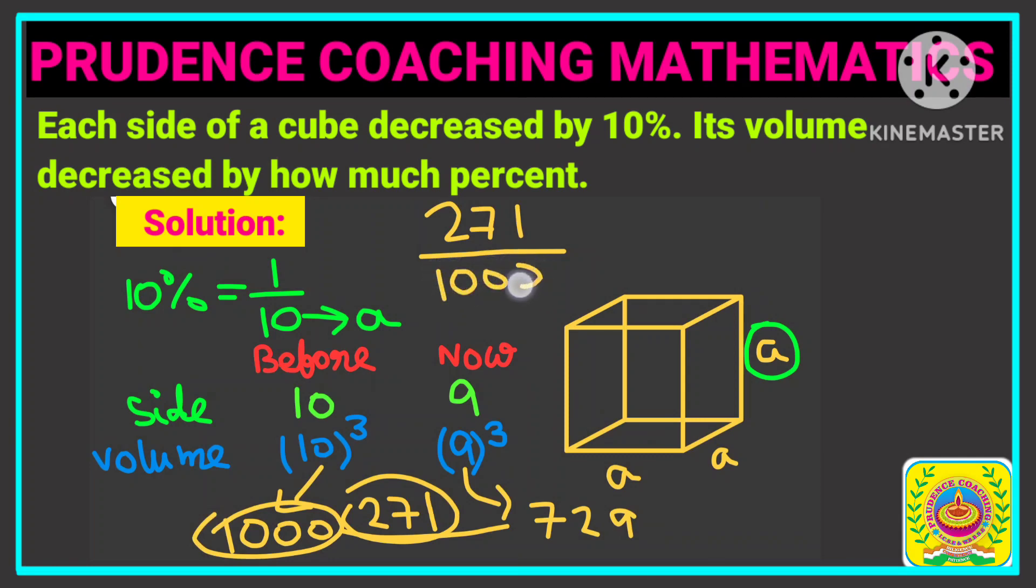So divided by 1000, and you are asked to find out percentage, so multiply by 100. So what you are getting is 0 and 0 you can cancel over here. You are getting 271 by 10, that is 27.1 percent. This is your final answer.